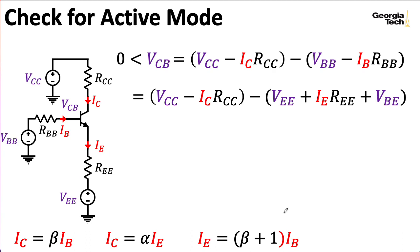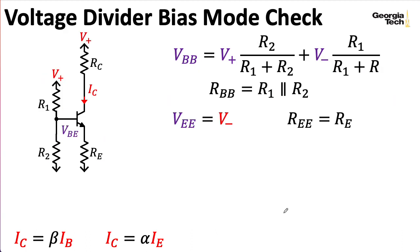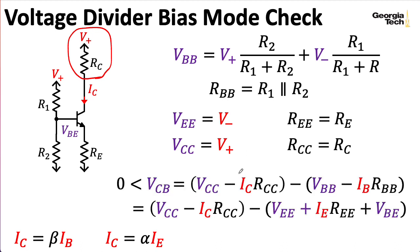So in terms of the Thevenin equivalents for our voltage divider bias example, in addition to what we've already computed, we need to compute the Thevenin equivalent looking out the collector. And that's pretty easy because it's already a Thevenin equivalent. And then I can take these values and substitute them into these expressions here, depending on what floats your boat, and see if the resulting numbers are indeed bigger than zero.